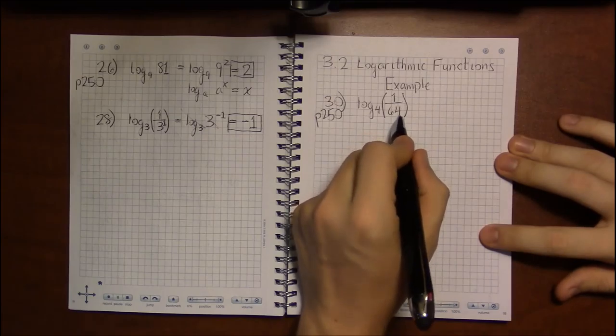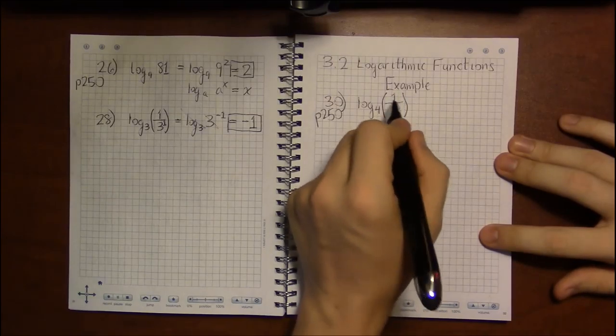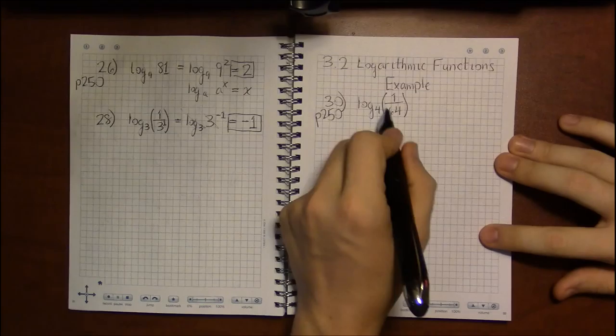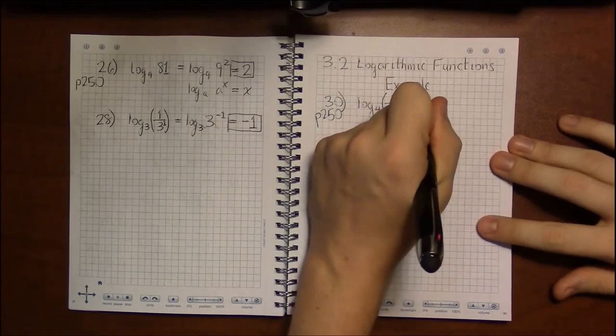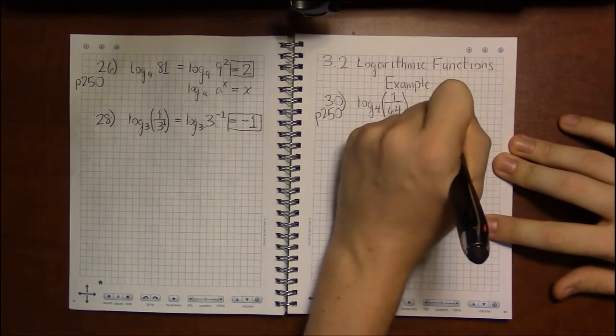Well, this means I'm going to have to write 64, actually 1 over 64, as a power of 4. But let's focus on one thing at a time. Let's see if we can write 64 as just 4 to some number.